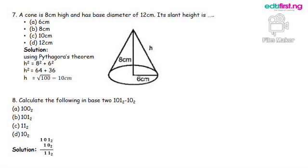Question 7: A cone is 8 cm high and has base diameter of 12 cm. Its slant height is dash. Solution: Using Pythagorean theorem, l raised to power 2 equals h raised to power 2 plus r raised to power 2.